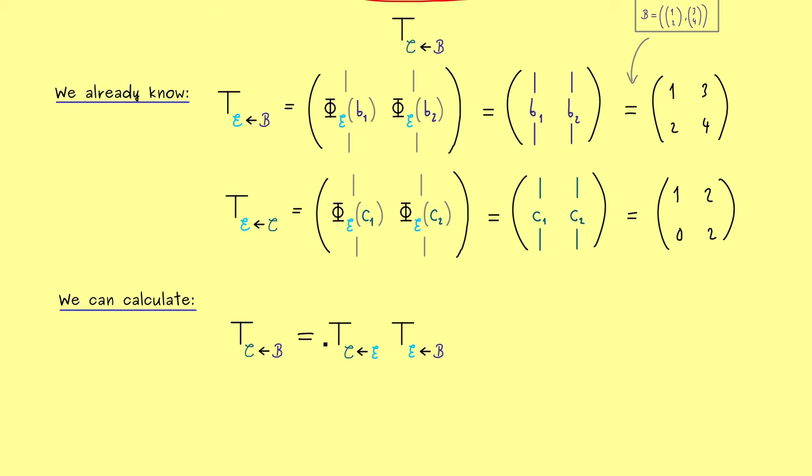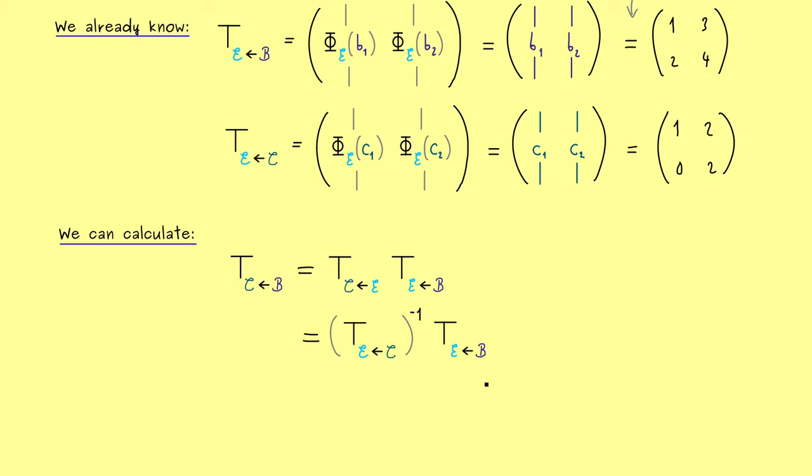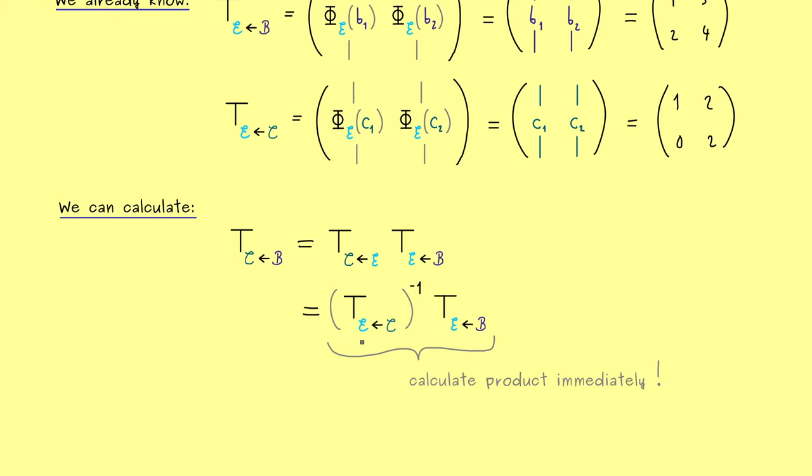However, now for our calculation, we see that this matrix here is the inverse of a matrix we already know. Hence, we just have to calculate the inverse here and multiply the result with this matrix T_EB. Now of course, in this particular example here, it's no problem at all to calculate the inverse of this 2x2 matrix. However, in higher dimensions, an inverse can make a lot of problems because calculating it is a lot of work. And actually, we don't need to know the inverse, because we just need to know this product here. Therefore, the efficient way is to calculate this product in one go. Indeed, you might already know how to do that, because it's just a Gaussian elimination.